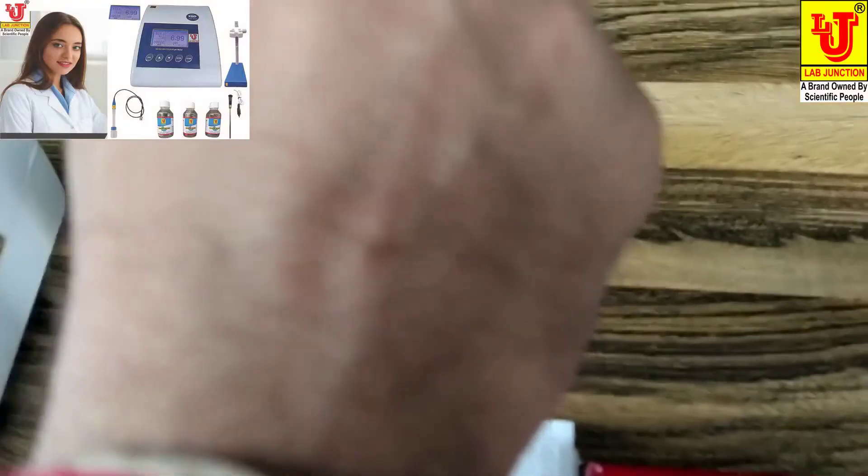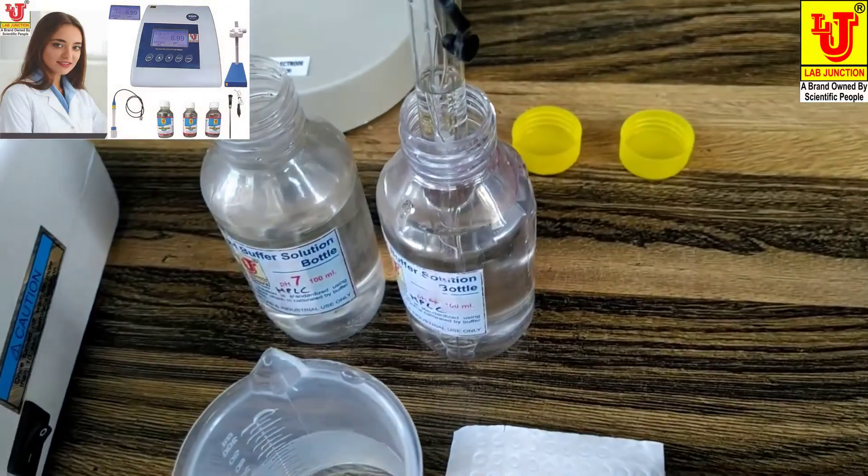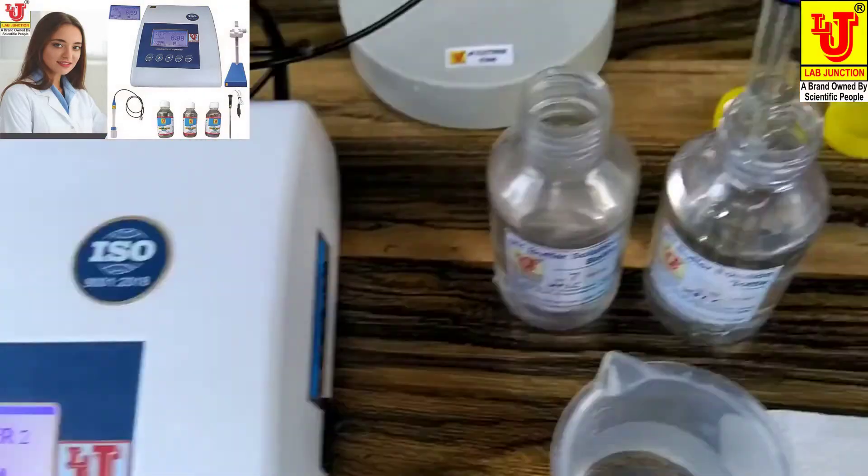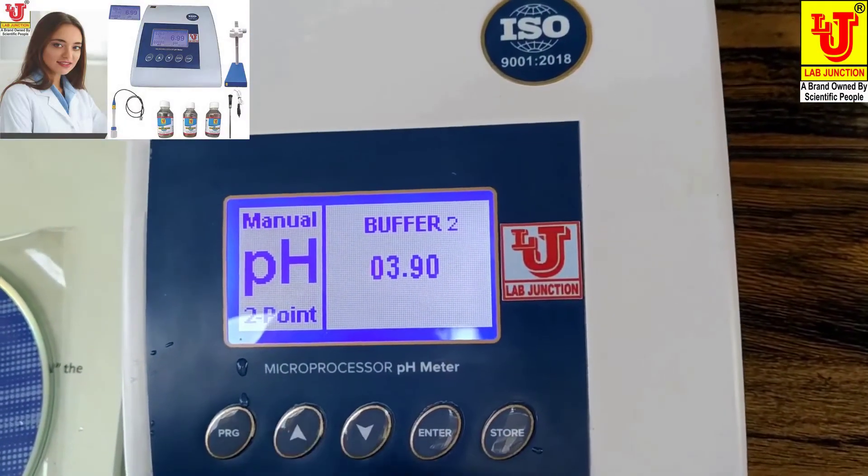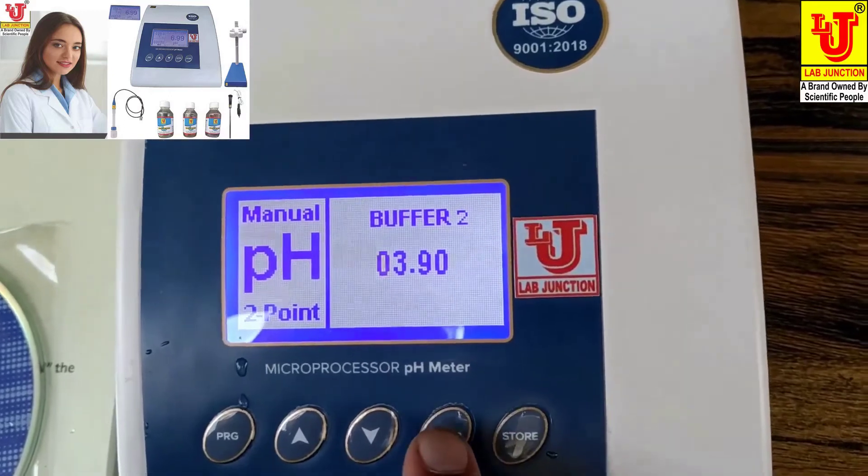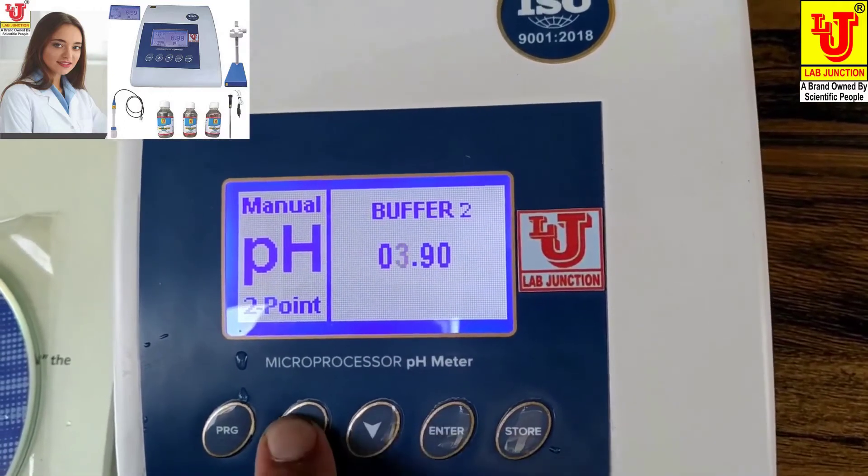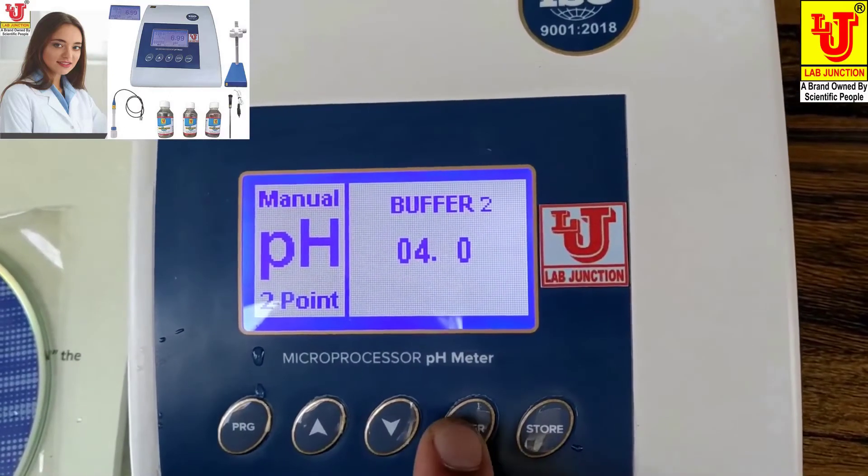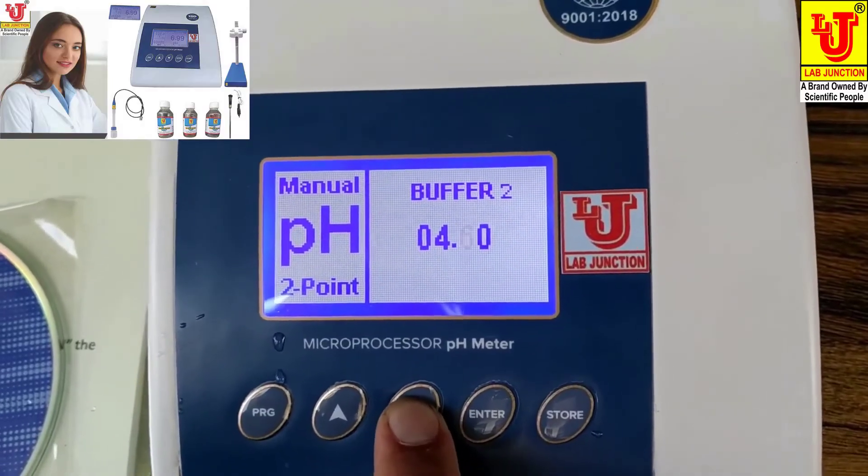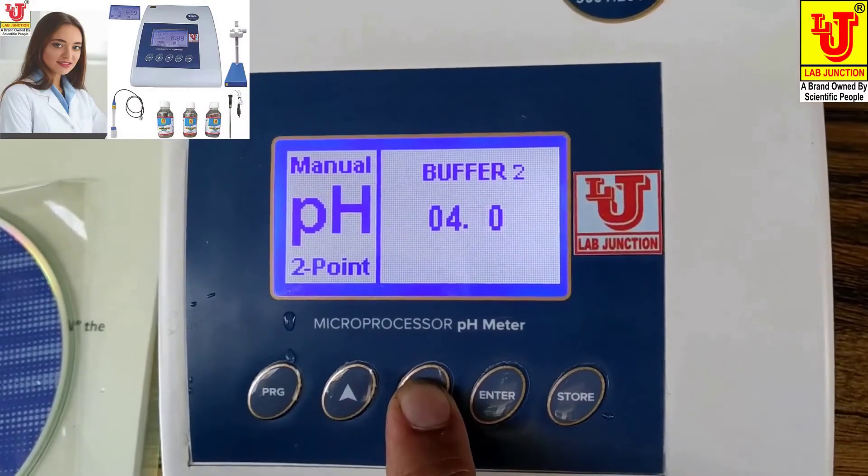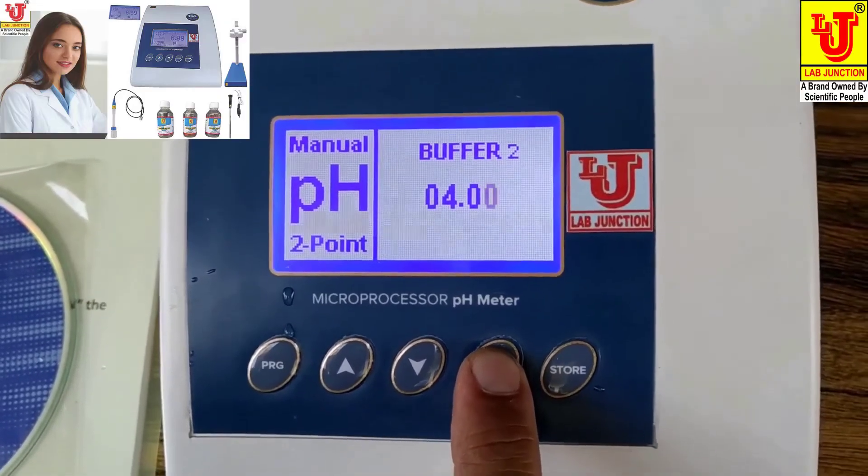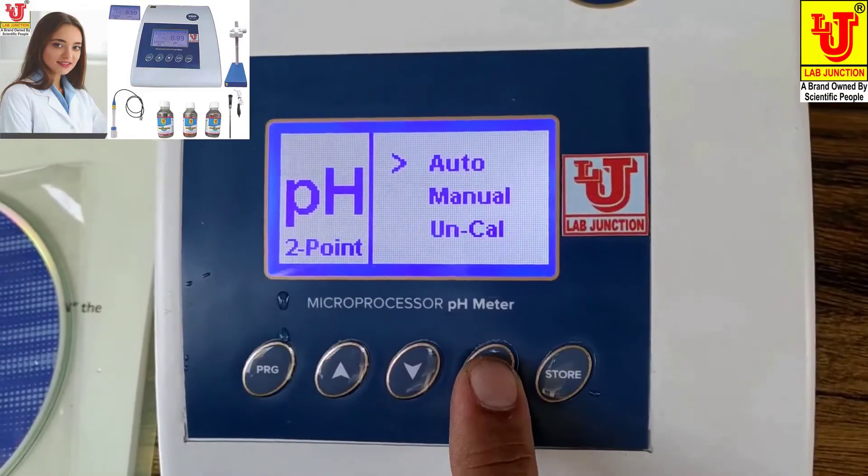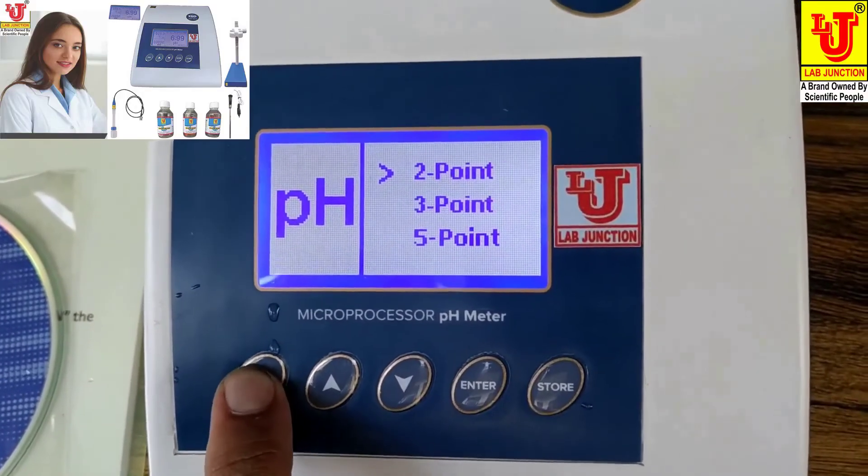And you dip your pH electrode to pH 4 buffer. Again you can set your own value. This is, suppose you want to 4 set. 4, enter. Calibrated.